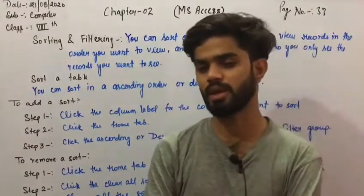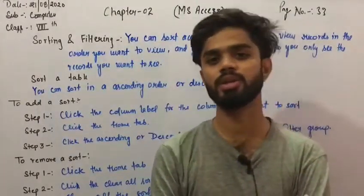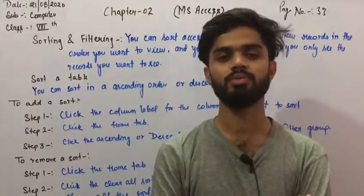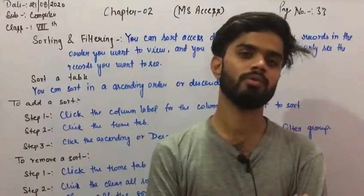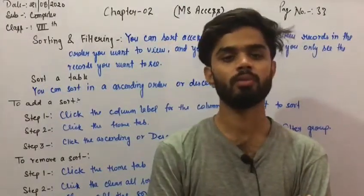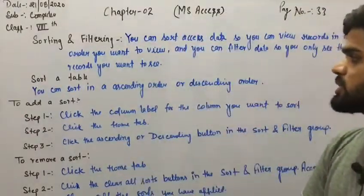And if we are saying about filtering, so filtering means we can say that it's a type of condition for showing our data. If we have a data of thousand students, so I can get filter. I want to see data from roll number 200 to 300 or 250 to 700. So these types of things are called filtering.